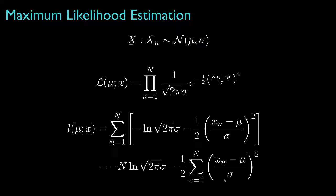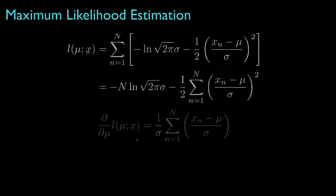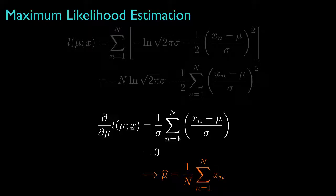It turns out that optimization of either the likelihood or the log likelihood would result in the same value for the unknown parameter, mu, but the log likelihood is a function that's much easier to analytically optimize. So if we differentiate the log likelihood with respect to the unknown parameter, mu, we'll get an expression that we can set to zero to solve for the maximum likelihood estimator, which turns out to simply be the sample mean for the data.